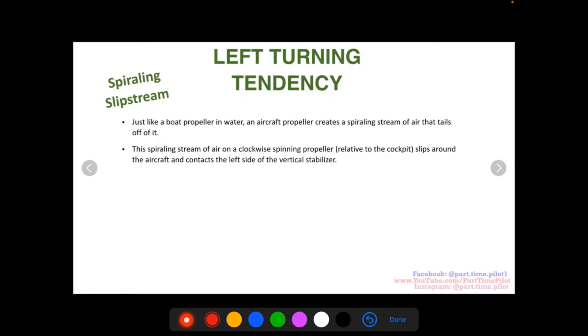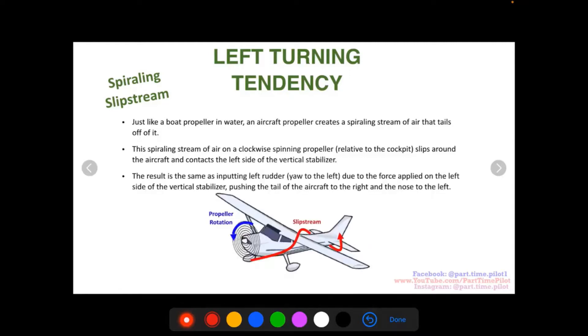slips around the aircraft and contacts the left side of the vertical stabilizer. So the result is the same as inputting left rudder or a yaw to the left due to the force applied on the left side of the vertical stabilizer, pushing the tail of the aircraft to the right and the nose to the left.